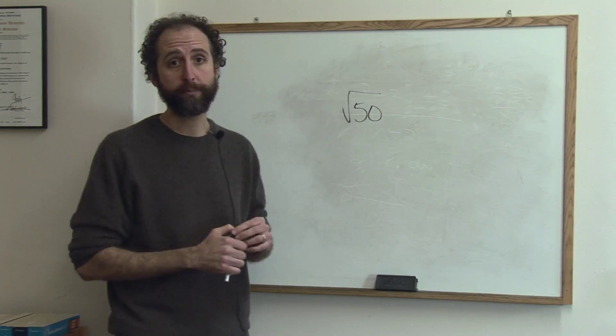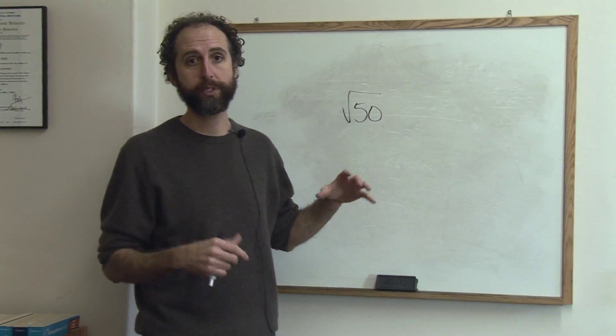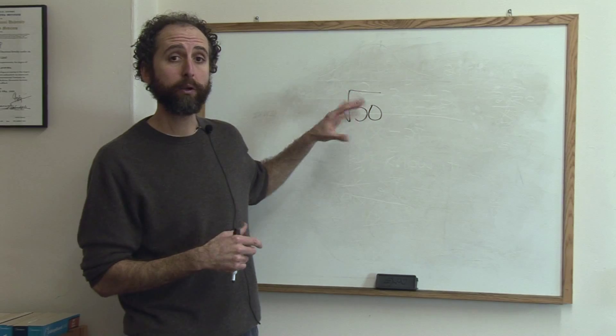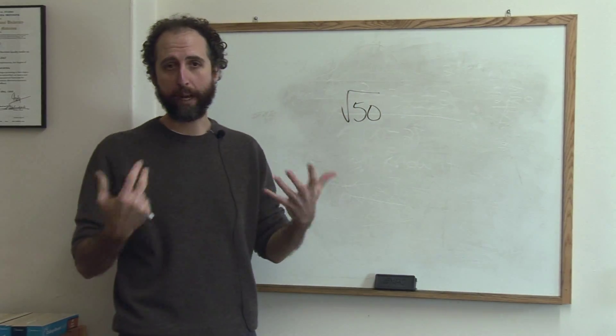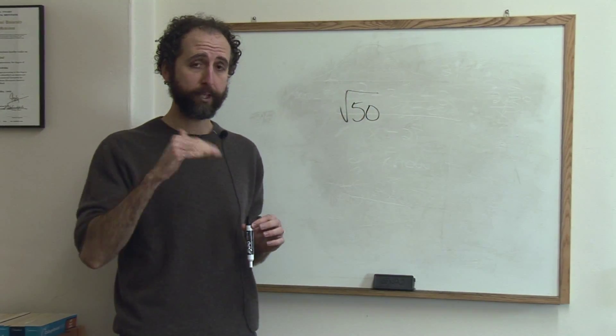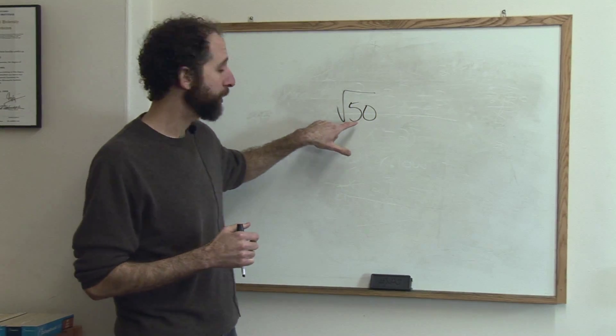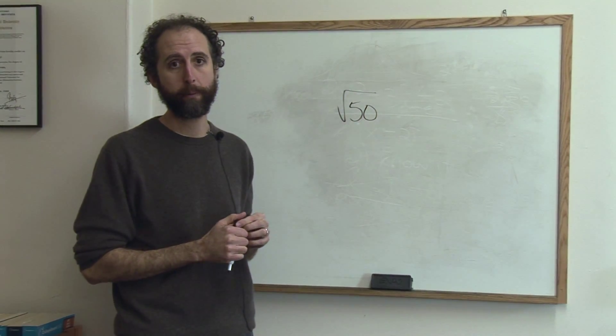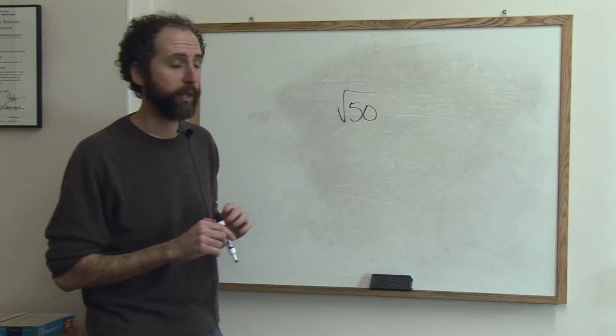They don't want a decimal answer. So either the test or the teacher would say you're not allowed to use your calculator or I want an exact answer rather than a decimal. In either of those cases, you're going to simplify this root rather than just get it on your calculator. Anytime you have to do something like that, the best thing to do is start by making a list of the perfect squares.